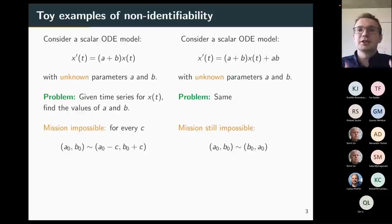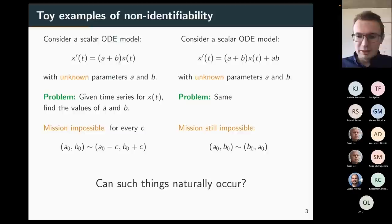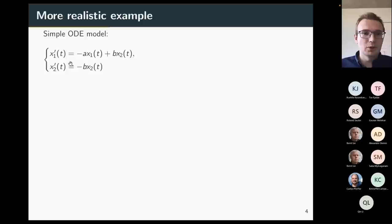So these are two simple examples of non-identifiability. Parameters A and B are not identifiable. These are of course artificial examples made for the sake of illustration. Can these things occur more naturally? Let me show one more example that's still simple but not as artificial as these two.